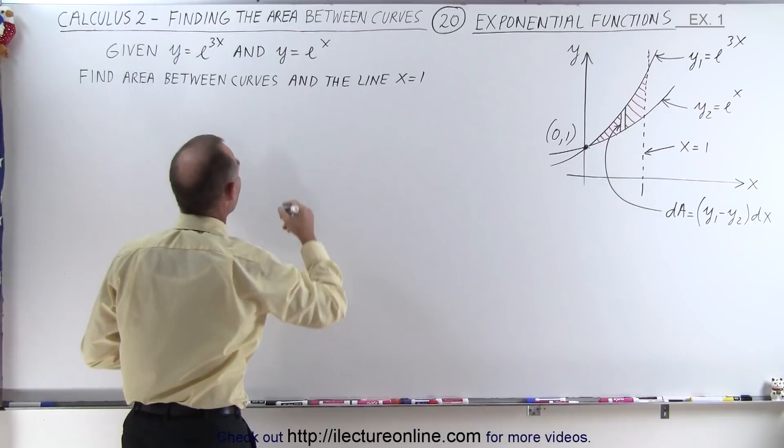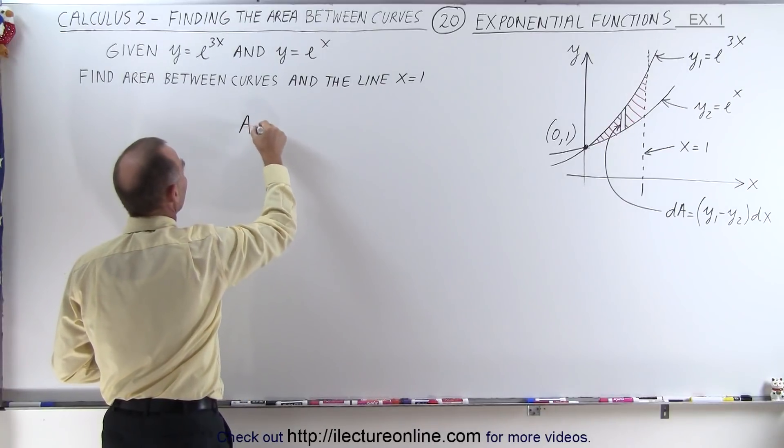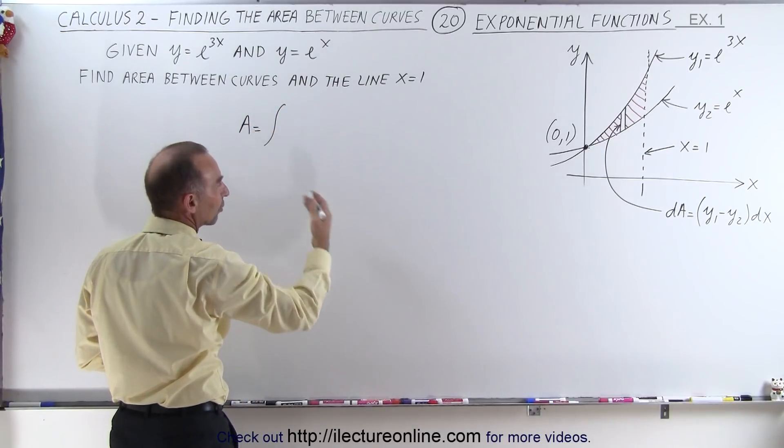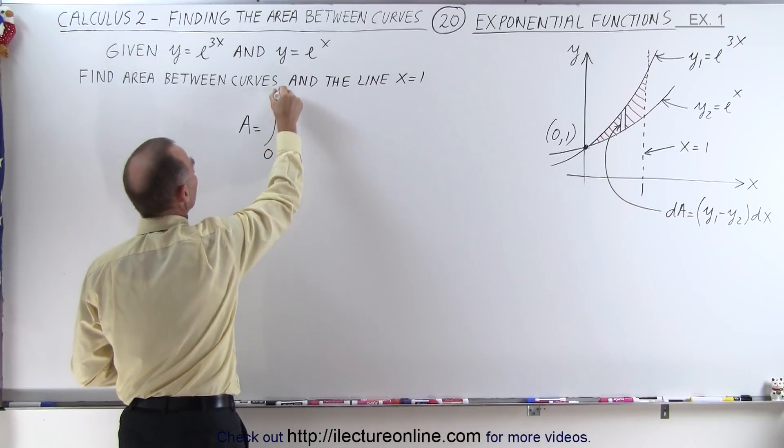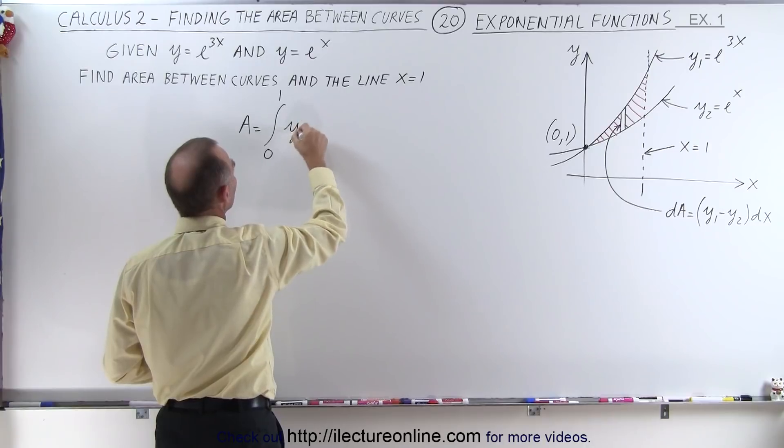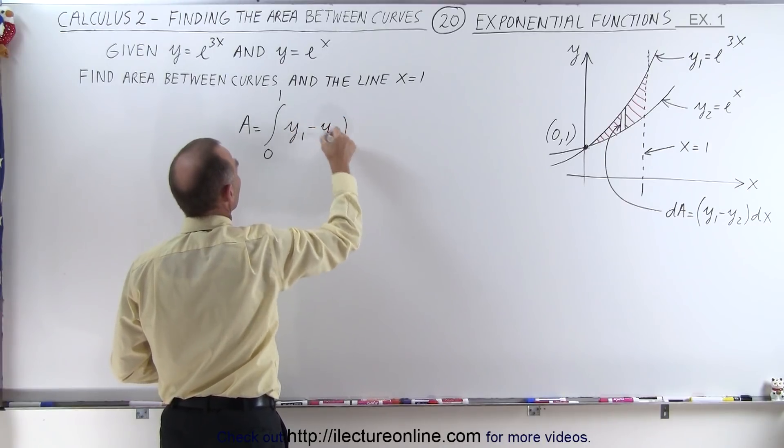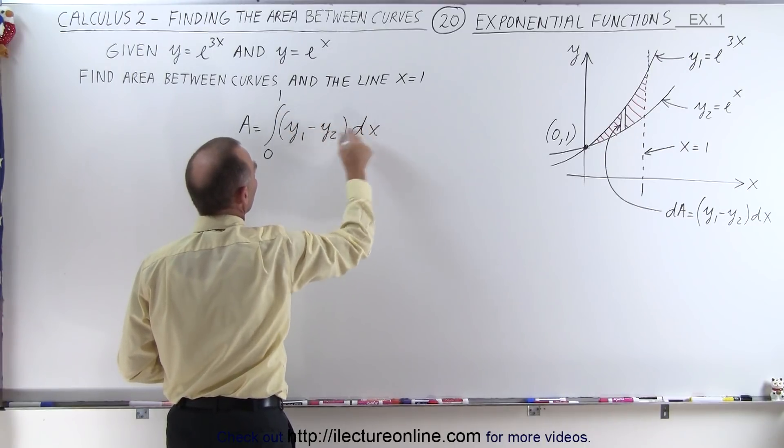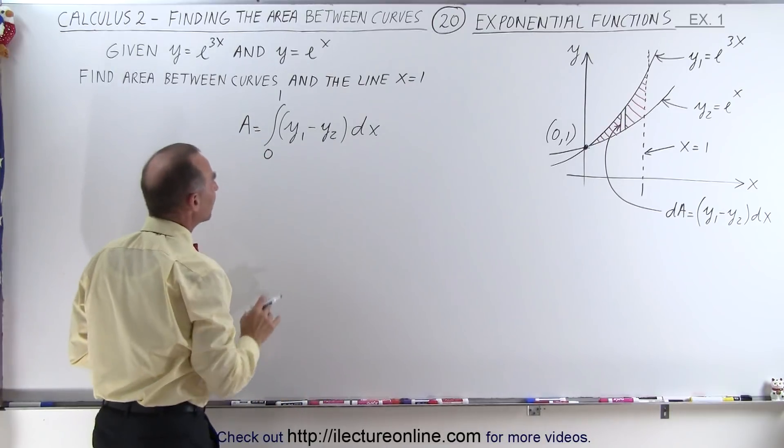And so we can find the area by taking the integral from, and these are going to be x limits, so from x equals 0 to x equals 1, of the functions y1 minus y2 times dx. So that will be a small area element dA.